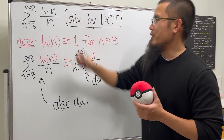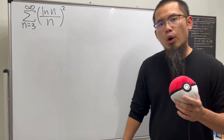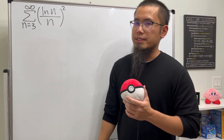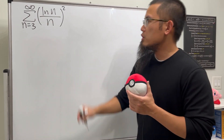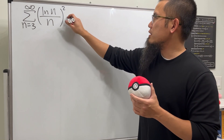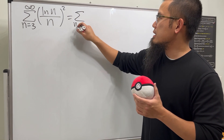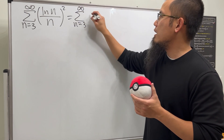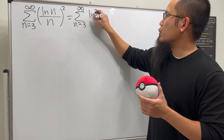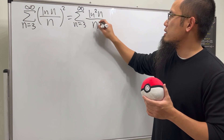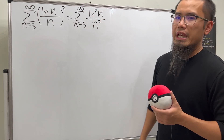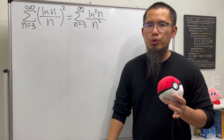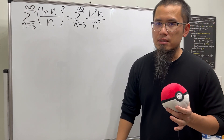For the second series, we raise everything to the second power, so this is the series as n goes from 3 to infinity of ln²(n) over n². We are not going to use any comparison tests here.